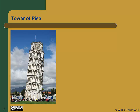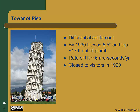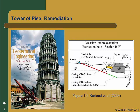Perhaps the most famous case of structural settlement is the Leaning Tower of Pisa. Unlike the uniform settlement seen at the Palacio de Bellas Artes, the bell tower at Pisa has suffered from differential settlement, with the south side settling significantly more than the north side. The differential settlement started during construction of the tower during the 12th through the 14th centuries. By 1990, the tilt had reached 5.5 degrees, or nearly 17 feet out of plumb. The rate of tilt at that time was about 6 arc seconds per year. The tower was close to collapse and was closed to visitors in 1990. Many methods were suggested to stabilize the tower, and several were tried unsuccessfully.